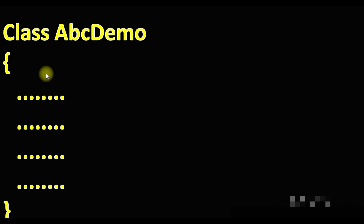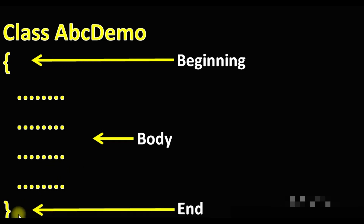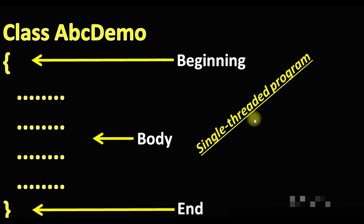If you look at this class diagram, this is the type of class diagram we have already worked with. This class has a beginning, a body, and an end, and the code executes in sequential order. This type of class is called a single-threaded program.